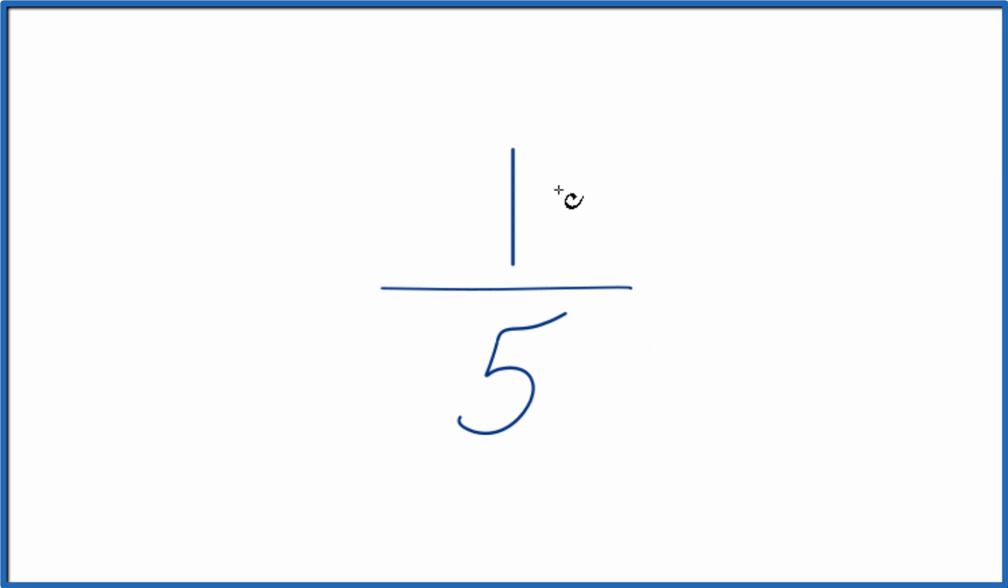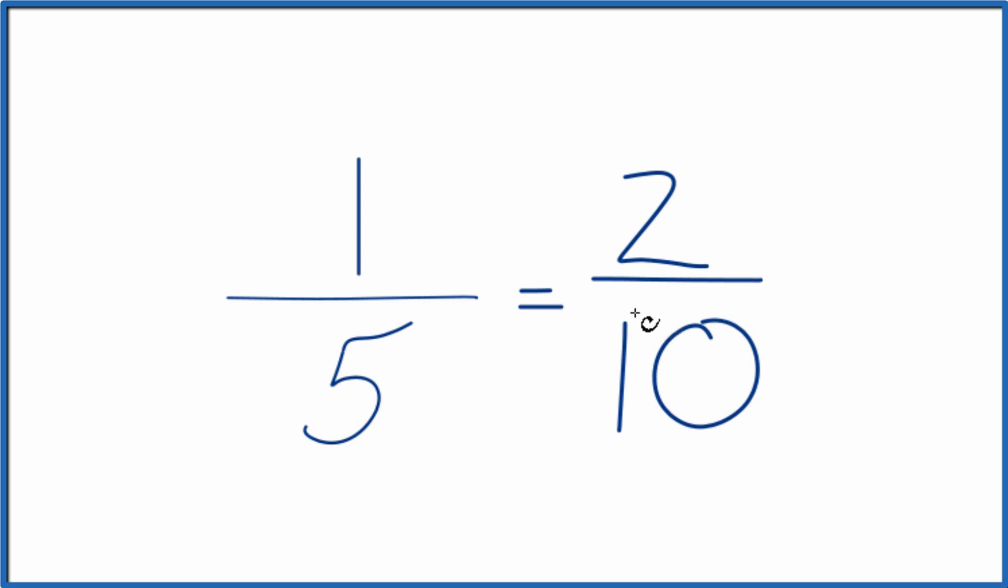So let's multiply both by 2. 1 times 2, that equals 2. 5 times 2, that equals 10. And that's an equivalent ratio to 1 fifth. If you divide 1 by 5 or 2 by 10, you're going to get the same decimal number. They're equivalent.